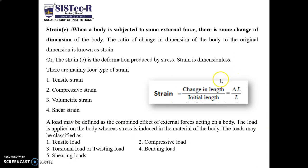Strain is defined as the ratio of change in length upon original length. If we apply an external load or external force on a body, it produces a change in length, represented by delta L. If the diameter changes, that is delta D. The original length is L, and in terms of diameter, capital D. There are mainly four types of strain: tensile strain, compressive strain, volumetric strain, and shear strain.